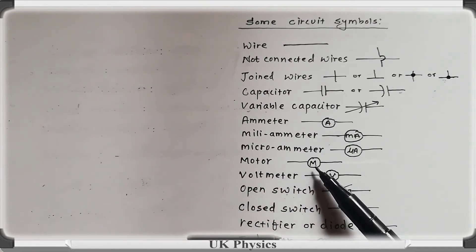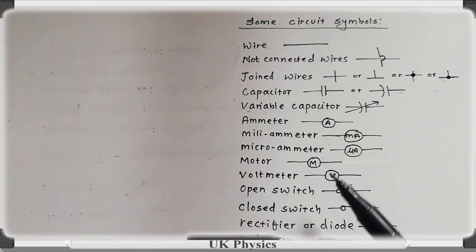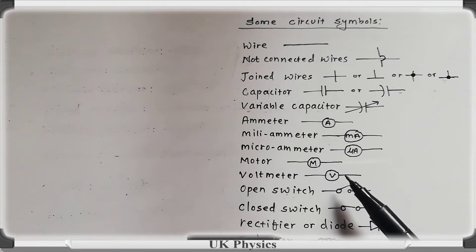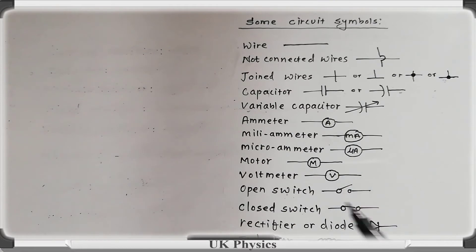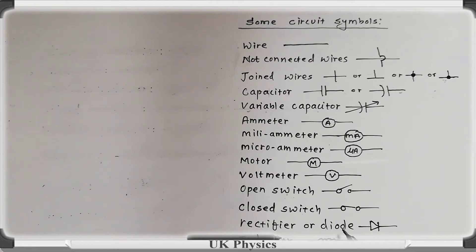This is the circuit symbol of a voltmeter, and it measures the voltage in the circuit. This is the circuit symbol of a switch, and this one is the closed switch. This is the circuit symbol of a rectifier or diode, and this device is used to convert alternating current to direct current.